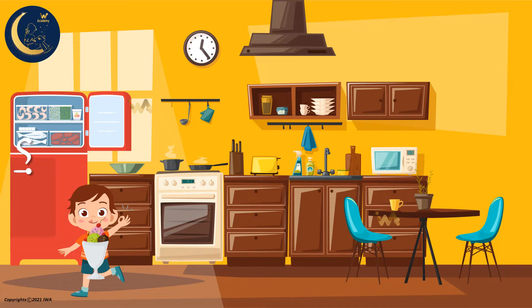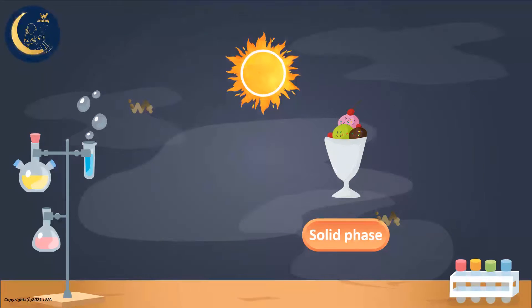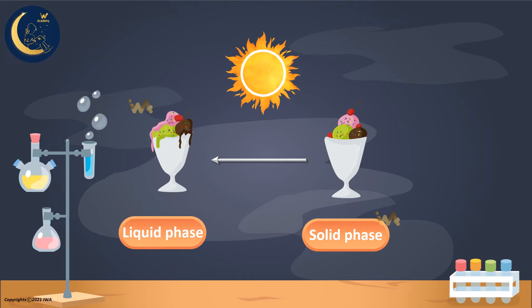I am sure you are wondering what happened. In the beginning, the ice cream was a solid. Then, when it was exposed to high temperatures of the sun, the ice cream heated up and became a liquid. So, the ice cream transformed from a solid to a liquid when it was exposed to heat. This process is called melting.